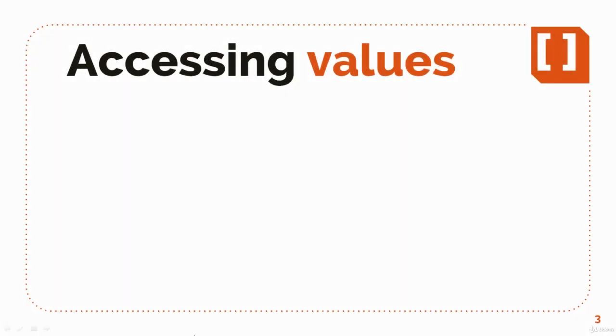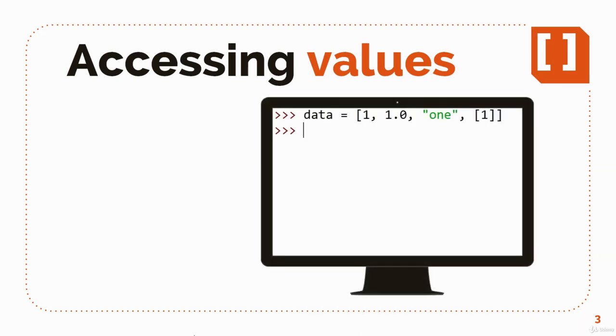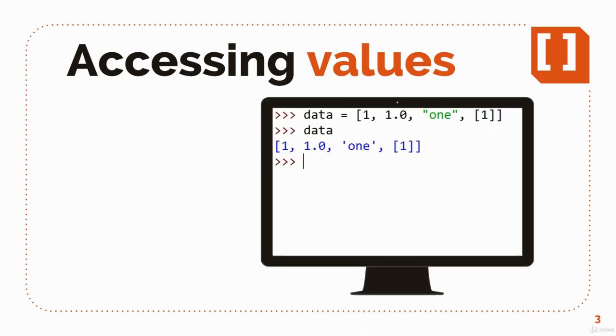Now let's look at how you can use the values in a list. First thing you can do is of course print the whole list. But you can also access each value from the list. This is called indexing.